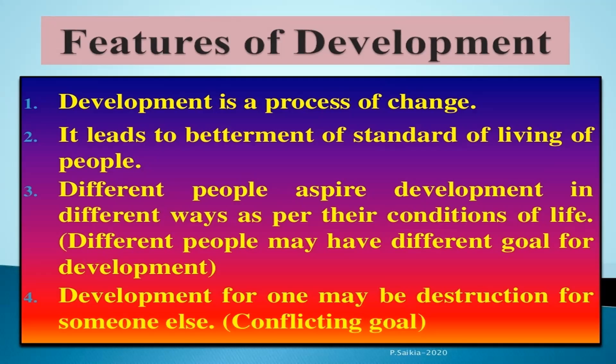Development for one may be destruction for someone else — this is what we call a conflicting goal. Now let us look at Table 1.1 in your textbook. The landless rural laborer wants more days of work — he wants employment, better wages, a school to provide education to his children, freedom from discrimination, and the right to become a leader in the village.